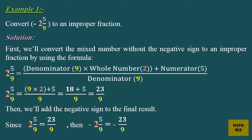2 and 5 ninths equals the denominator, 9, times the whole number, 2, plus the numerator, 5, over the denominator, 9. So 2 and 5 ninths equals 9 times 2, plus 5, over 9. Which equals 18 plus 5, over 9. Which equals 23 over 9.